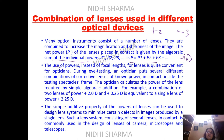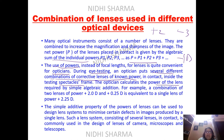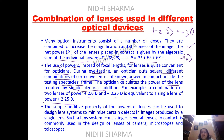Opticians use the addition of powers during eye testing. They try several combinations of corrective lenses with known powers to find what suits your spectacle frame. For example, combining +2 diopter and +0.25 diopter gives a single lens power of 2.25 diopter — positive, so the combination behaves like a convex lens.